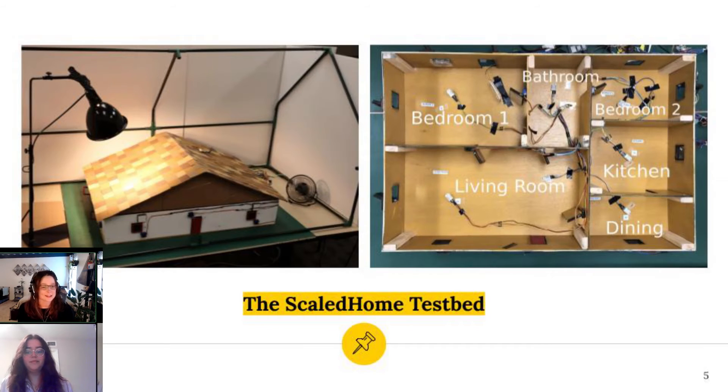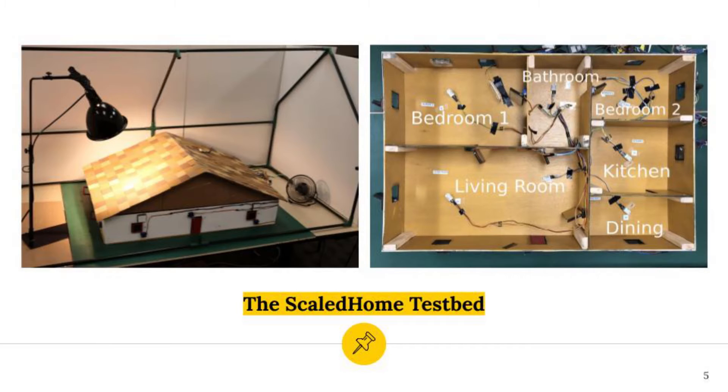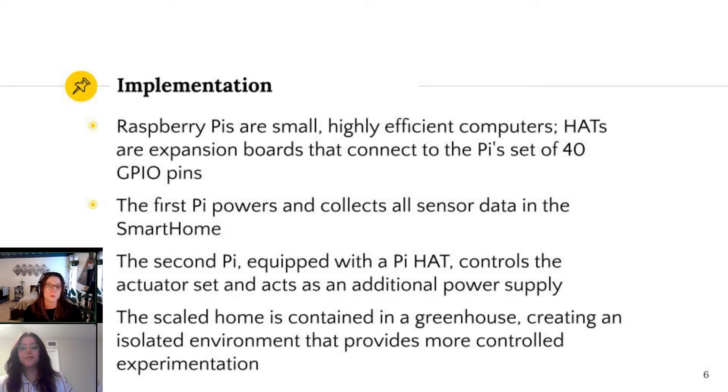This is an internal and external view of our smart home. We use Raspberry Pis as our computer of choice. These highly efficient computers can also include a Pi hat expansion board that connects to the Pi set of 40 GPIO pins. Our first Raspberry Pi computer powered and collected all sensor data in the smart home. Our second Raspberry Pi, equipped with a Pi hat, controlled the actuator set consisting of windows, doors, and internal appliances, and also acted as an additional power supply.